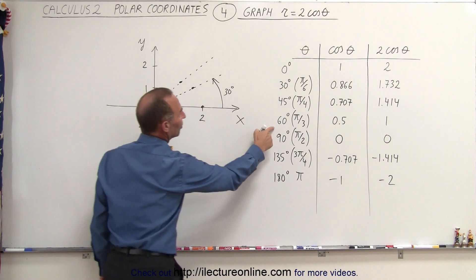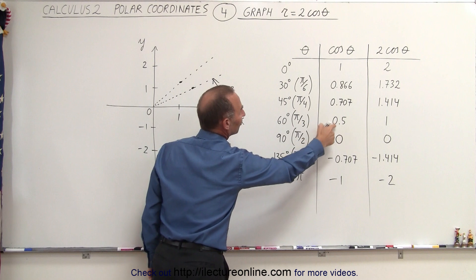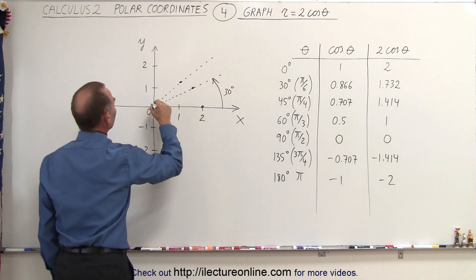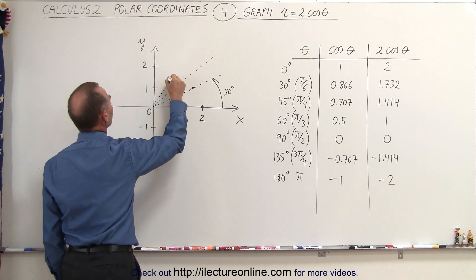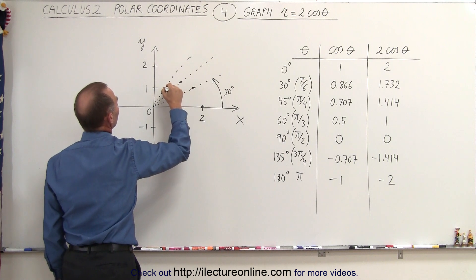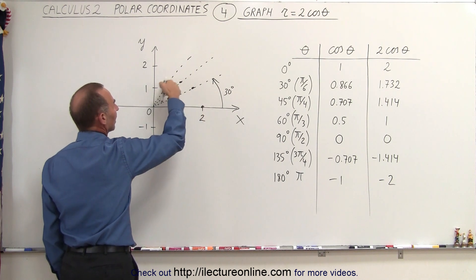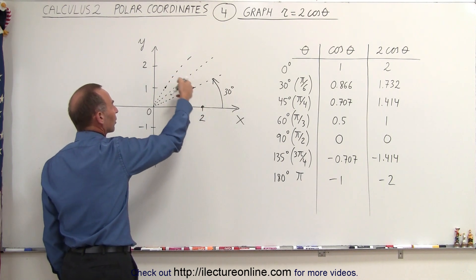Then at an angle of 60 degrees, the cosine of that is 0.5, twice that is 1. So at an angle of 60 degrees, we're down to about 1. So you can see that there, if you connect those points, you would get a curve like that.